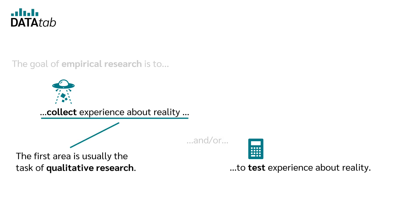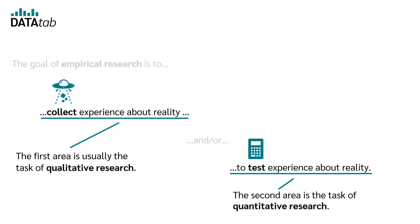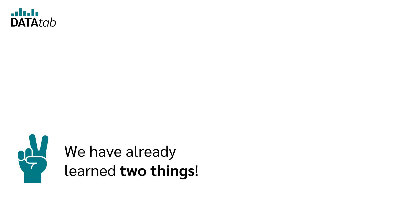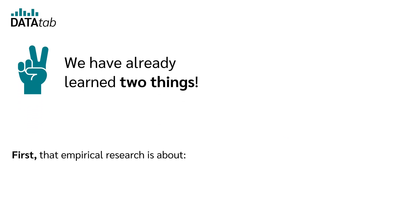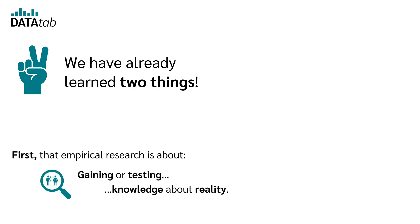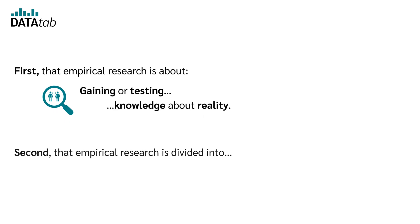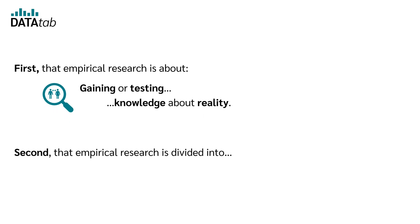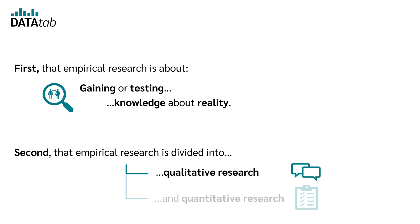The goal of empirical research is to collect experience about reality and/or to test experience about reality. The first area is usually the task of qualitative research, and the second is the task of quantitative research. Empirical research is thus divided into qualitative research and quantitative research.